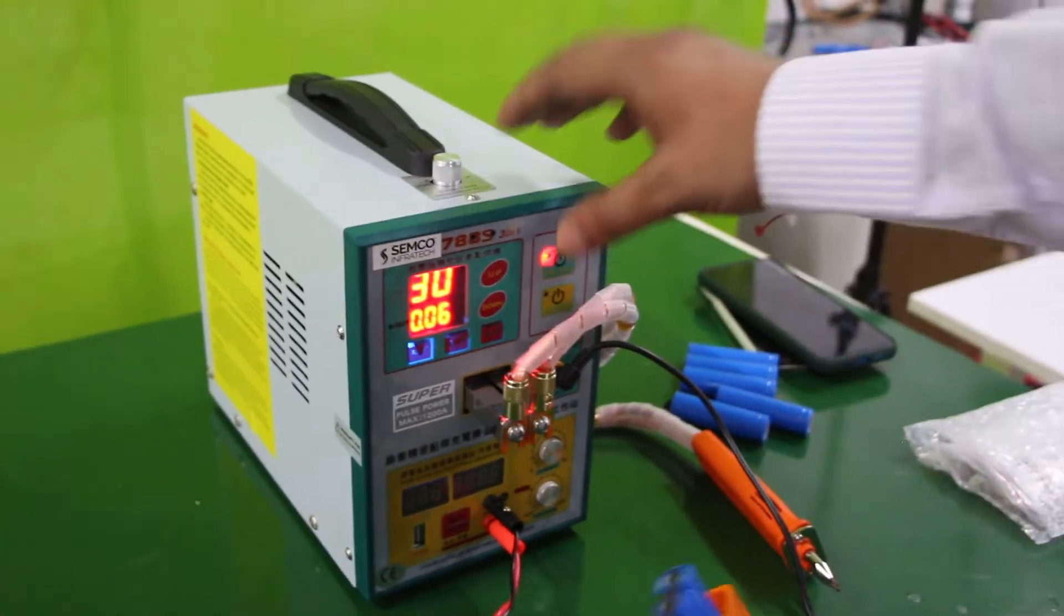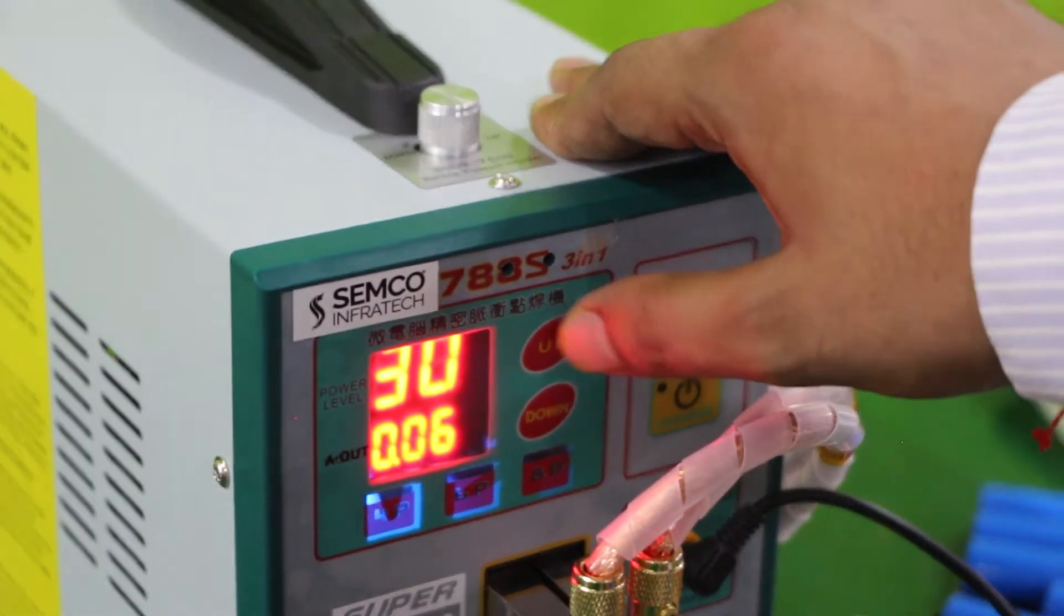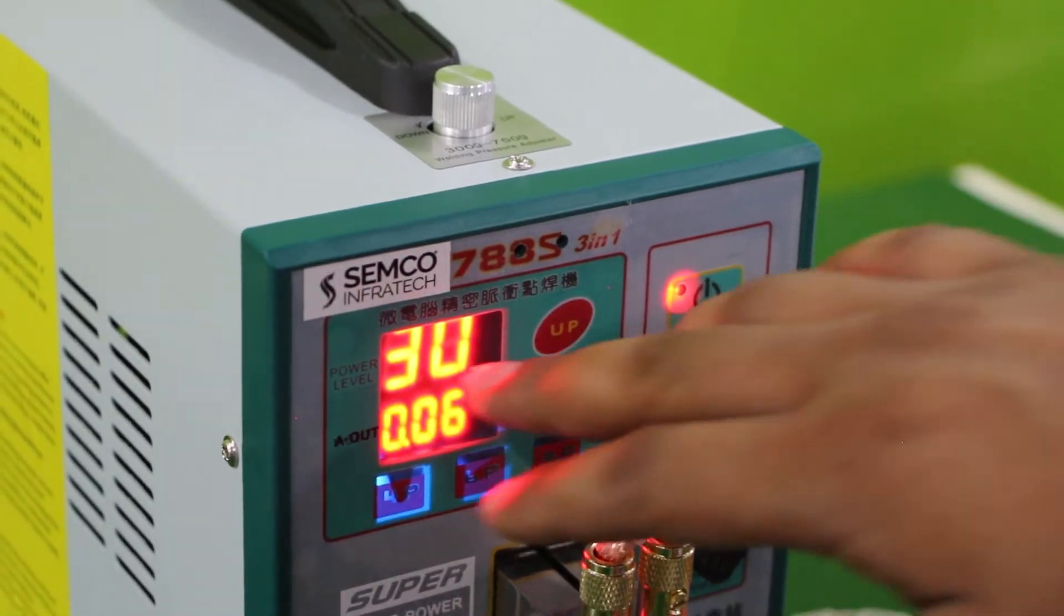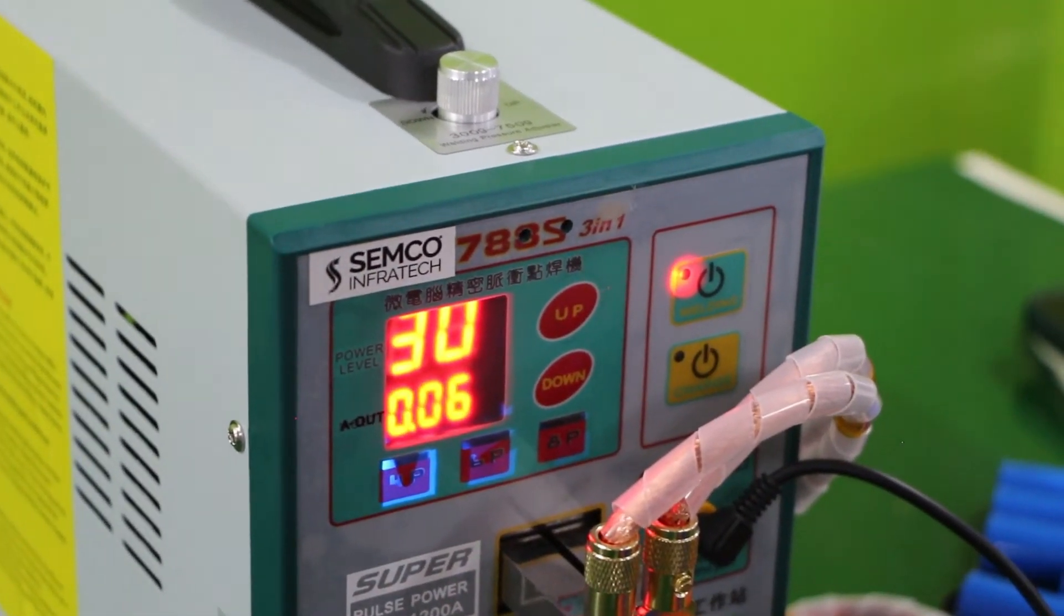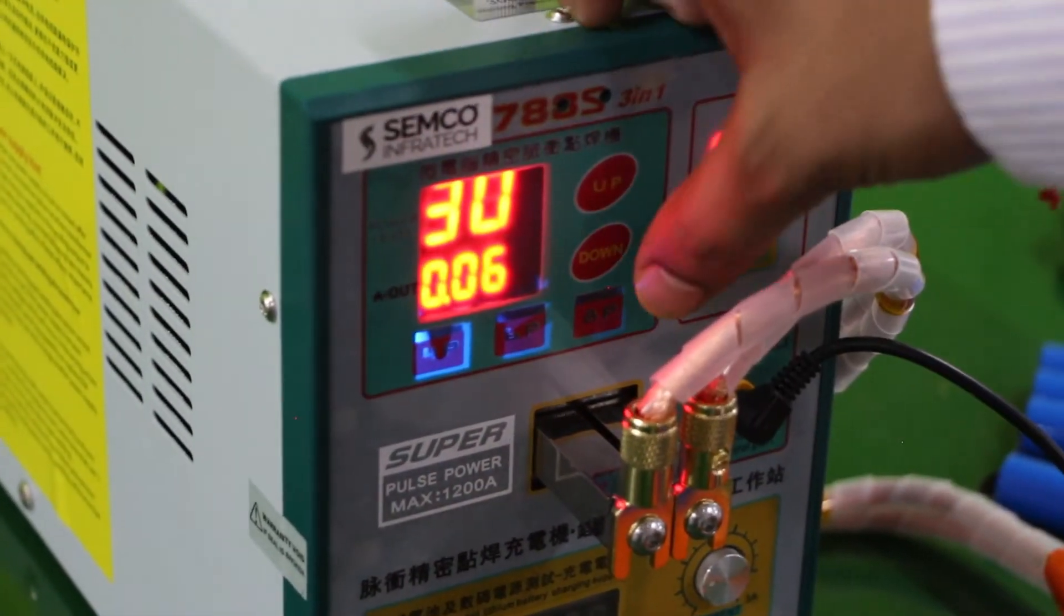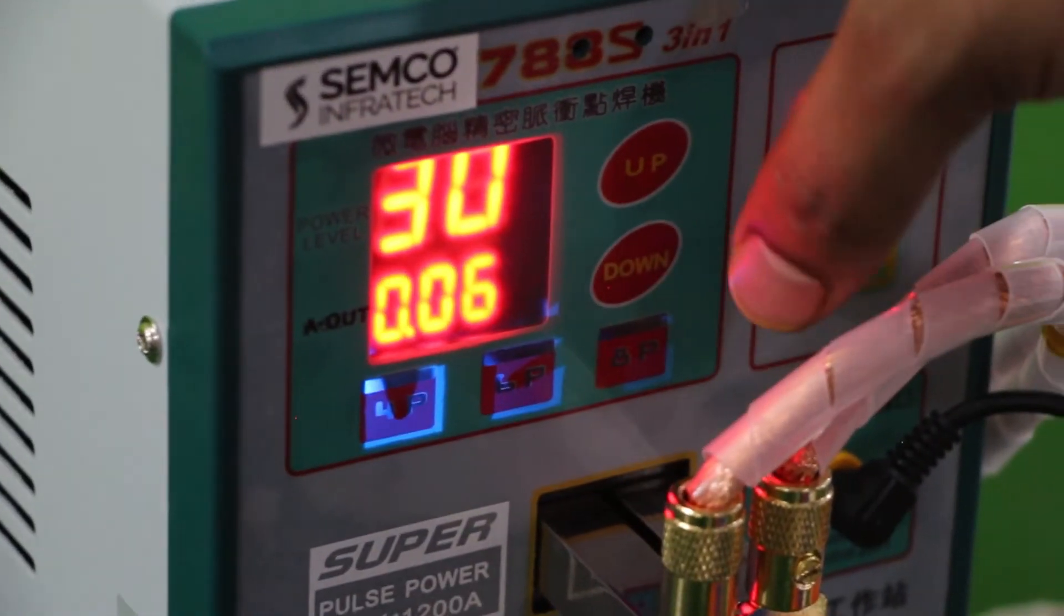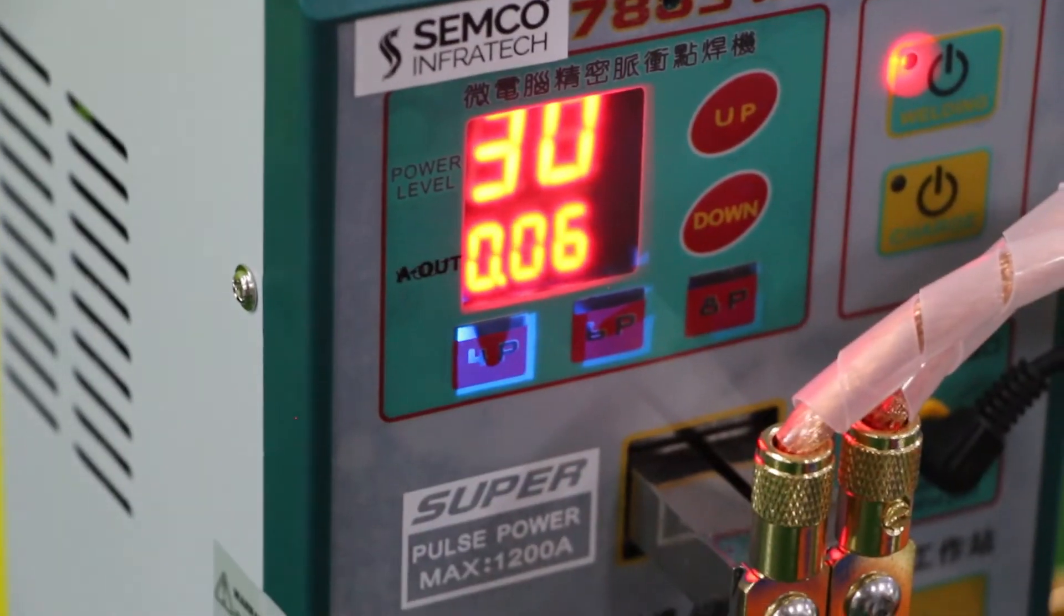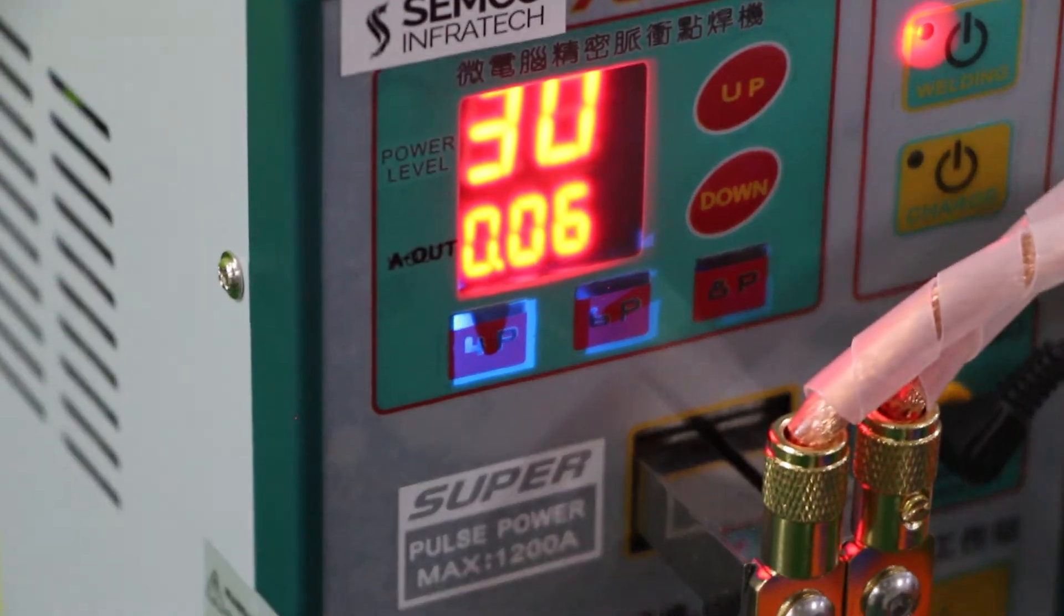As you can see, we have two buttons: up and down. These buttons are used to set power consumption during welding. The setting will be based on your requirements, such as nickel plate thickness. Here we have 4P, 6P, and 8P, which are pulse ratings. If we press this, it will turn on, and if we press again, it will turn off. This allows us to give extra time for current flow through the handle.